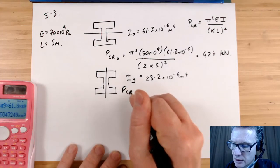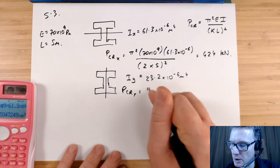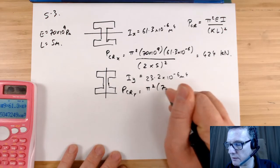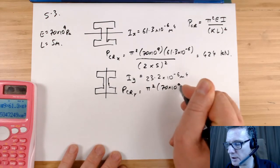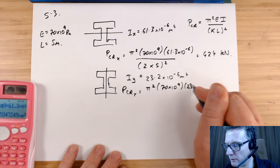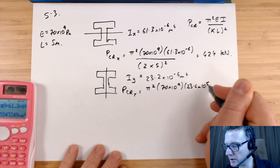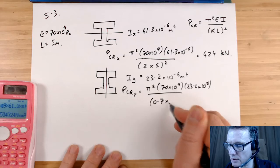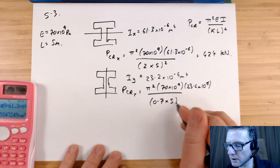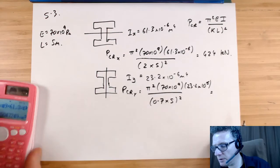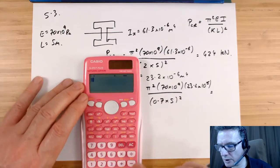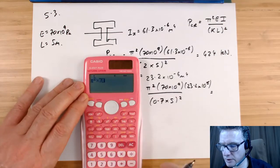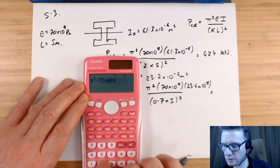So P_critical_y equals pi squared, 70 times 10 to the 9, 23.2 times 10 to the minus 6, all over 0.7 times 5 squared.